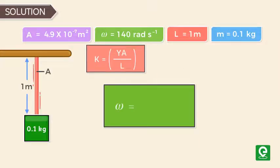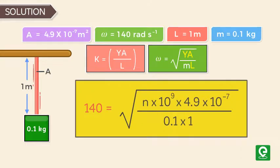Angular frequency equals square root of SHM constant divided by mass. On substituting the value of spring constant, we get angular frequency equals square root of Young's modulus times area upon mass times length. On substituting the given values, we get n equal to 4.